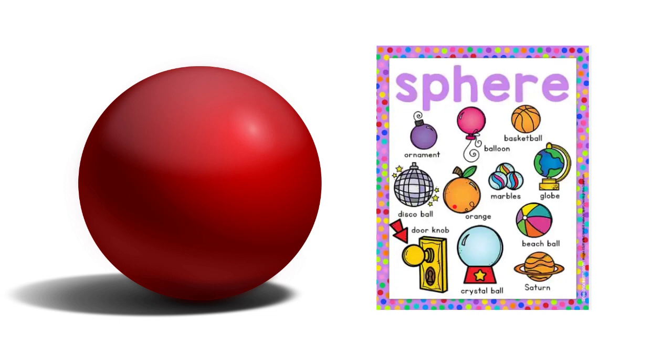This is an orange. And the shape of the orange is a sphere. The marbles, the globe, the beach ball, the crystal ball, and the door knob. They all have the sphere shape. So the sphere shape is from the 3D shapes. It is not flat. It is round and we can roll it. If you have any sphere objects in your house, please bring them to school and let's discuss them together.